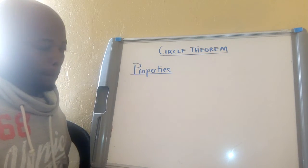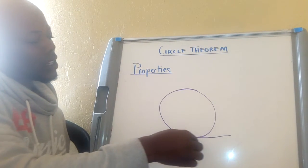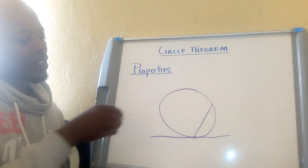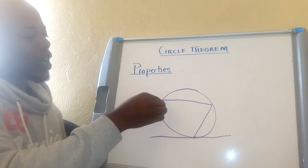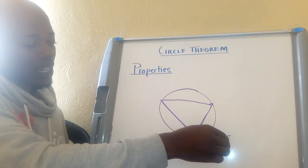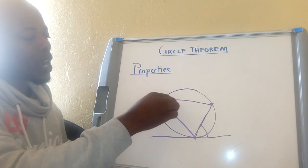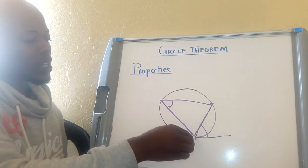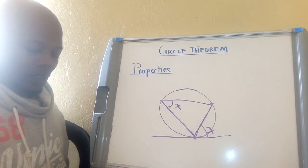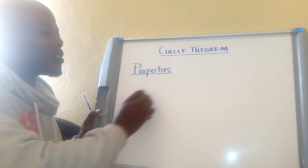Another property: when you have a circle with a tangent line and a chord that touches the tangent line, the angle between the chord and the tangent line is equal to the angle formed on the opposite side by that chord up on the circumference. If this angle is x, that angle will also be x.